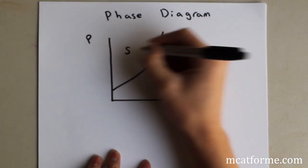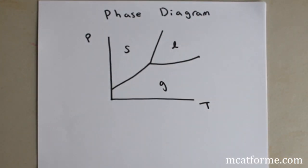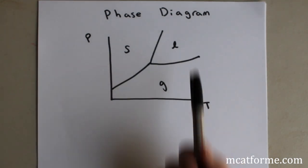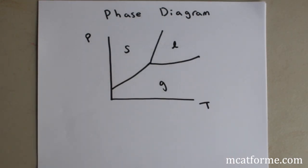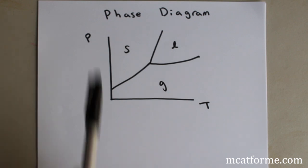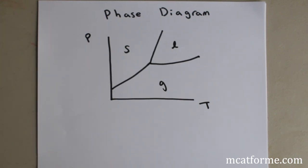The diagram shows three different phases: solid, liquid, and gas. Depending on whether you change the temperature or the pressure, how will that change the phases?